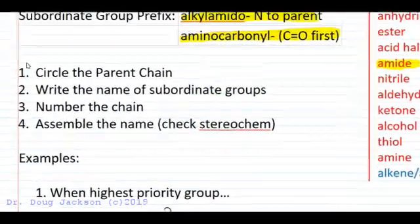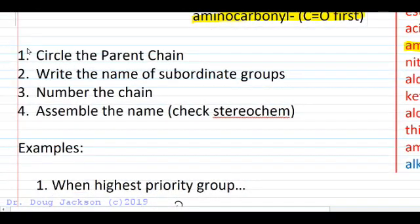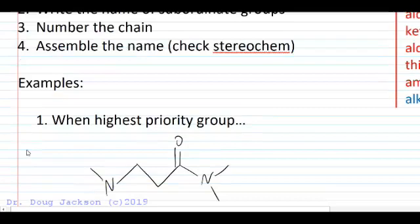So let's look at some examples. As always, we're going to be careful when we name compounds. We're going to circle the parent chain so that any group intersecting the circle gets a name. We're going to write that name, we're going to number the chain, and then we're going to assemble the name checking for stereochemistry.